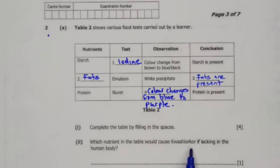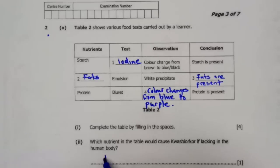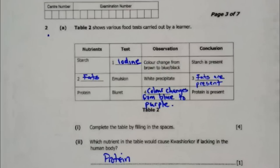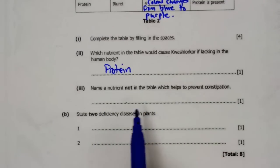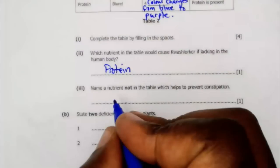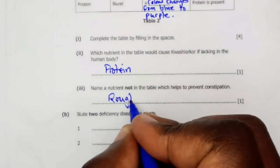A2: Which nutrient in the table causes kwashiorkor if lacking in the human body? If proteins are lacking, an individual suffers from kwashiorkor. A3: Name a nutrient not in the table which helps to prevent constipation. The nutrient is roughage.